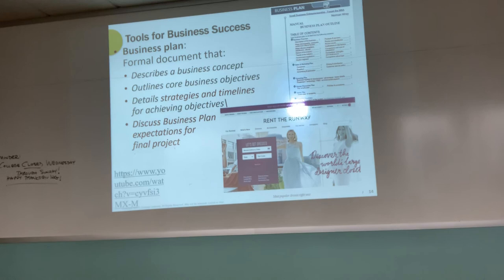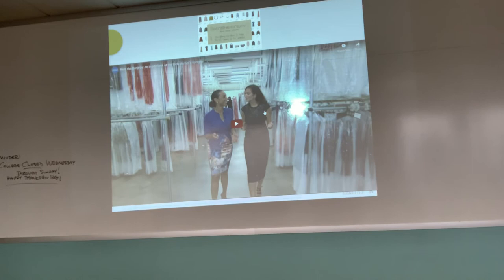Now every retailer is jumping on the bandwagon — Banana Republic and Bloomingdale's just announced rental programs. You'll see everybody adapting an Uber or Airbnb model. I want to show this video because it's a great example of competitive advantage — Part 1B of your business plan. A company that does something completely different, better, and unique from what competitors are doing.